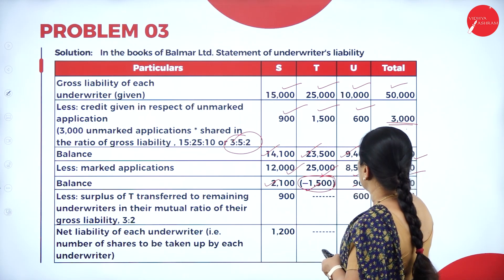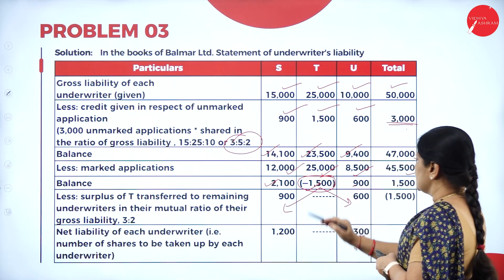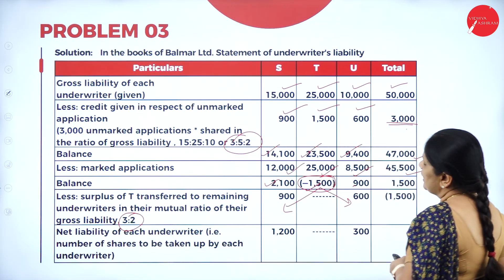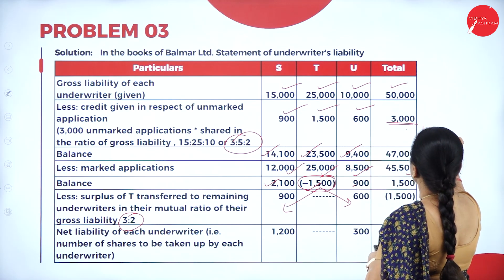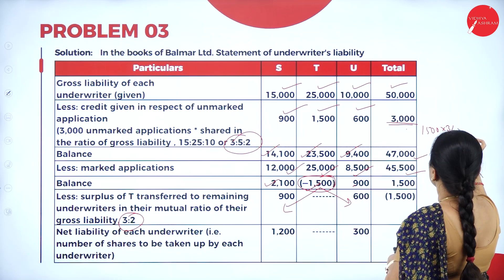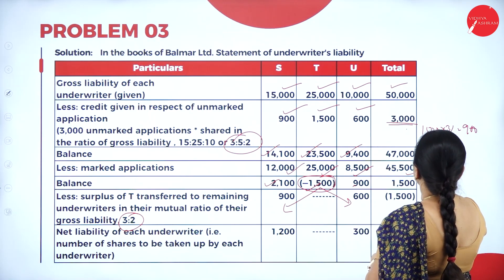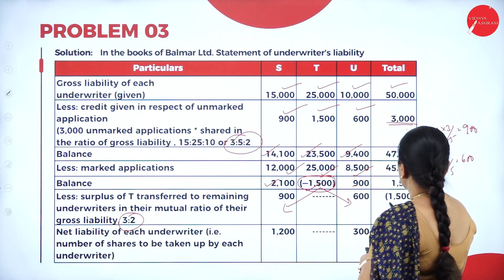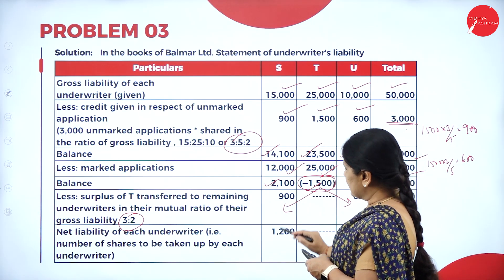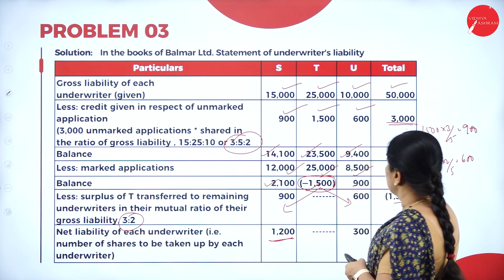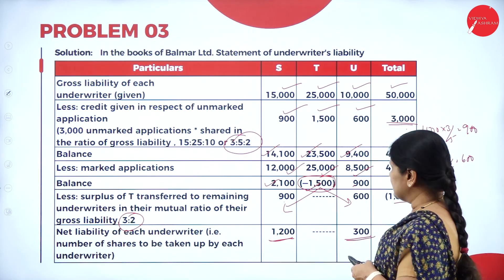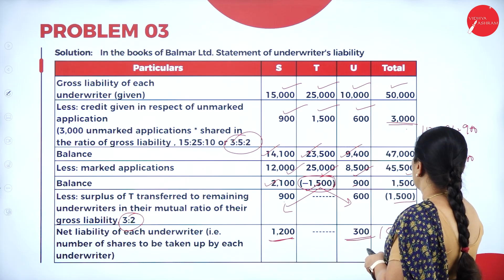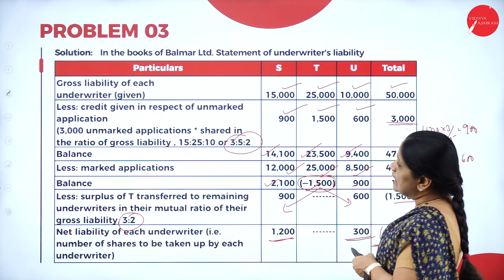This is the surplus of the second underwriter. This surplus of 1,500 has to be shared among the other two underwriters in the ratio of 3 is to 2: 1,500 into 3 by 5 gives 900, and 1,500 into 2 by 5 gives 600. So deducting 900 from 2,100 gives 1,200, and from 900 deducting 600 gives 300. The net liability of each underwriter is 1,200, zero and 300 — totalling 1,500.